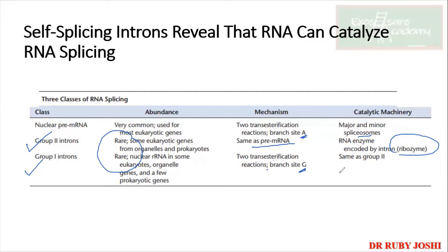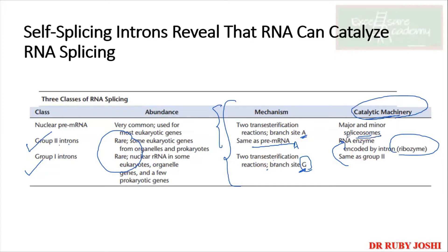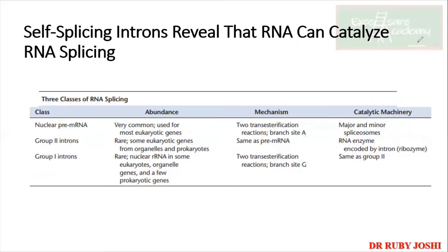In Group I, there are also two transesterification reactions, but instead of a branch A site, there is a G nucleotide. Both Group I and Group II are ribozymes. The key comparison: nuclear pre-mRNA and Group II share the same mechanism; the difference is Group I uses G instead of A as the branch site. The catalytic machinery for Group I and II is ribozymes rather than the spliceosome.